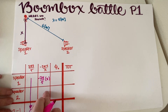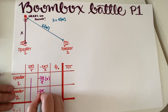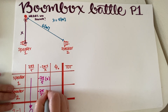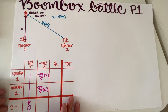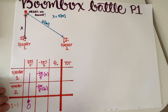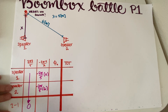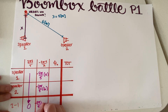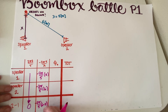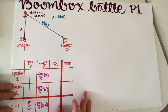Speaker 2 is at 6 meters, so that's 6 meters in the chart. I decided to do 2 minus 1, so the path length difference is 6 minus X. It doesn't matter which order you subtract as long as you are always consistent.